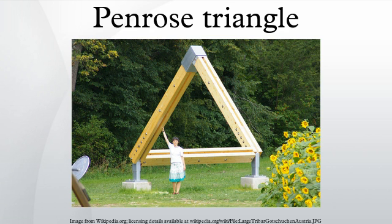This combination of properties cannot be realised by any three-dimensional object in ordinary Euclidean space. Such an object can exist in certain Euclidean three-manifolds. There also exist three-dimensional solid shapes each of which, when viewed from a certain angle, appears the same as the two-dimensional depiction of the Penrose Triangle. The term Penrose Triangle can refer to the two-dimensional depiction or the impossible object itself.